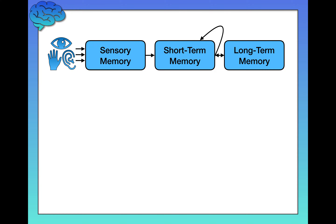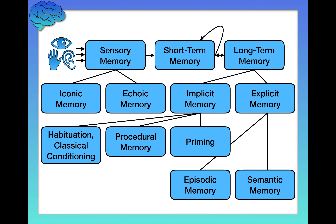Within these different systems of memory are subsystems. All of them except short-term memory have subsystems. The good news is these different forms of memory are straightforward and easy to understand. Some of which we've already learned about, like habituation and classical conditioning, which are part of long-term memory. Anything green relates to sensory memory, anything yellow is short-term memory, and anything red relates to long-term memory.